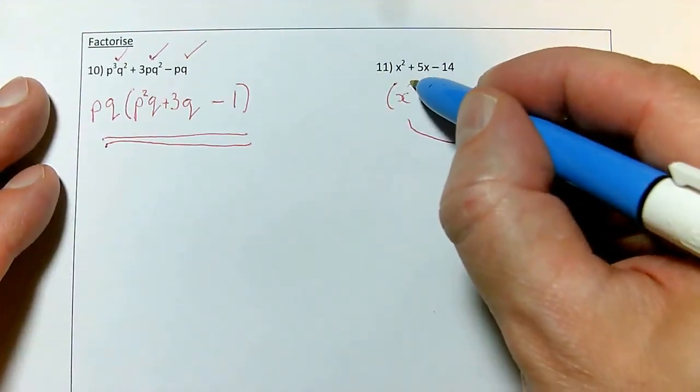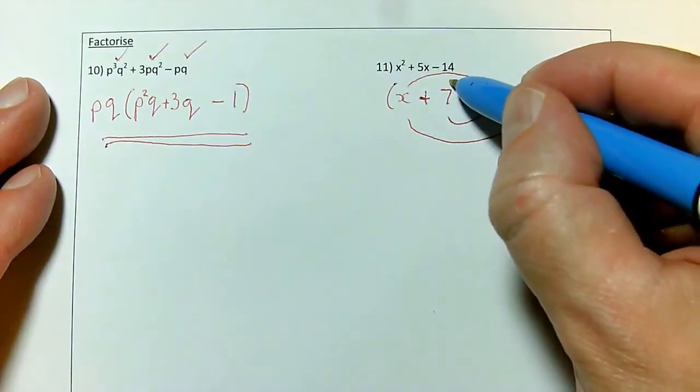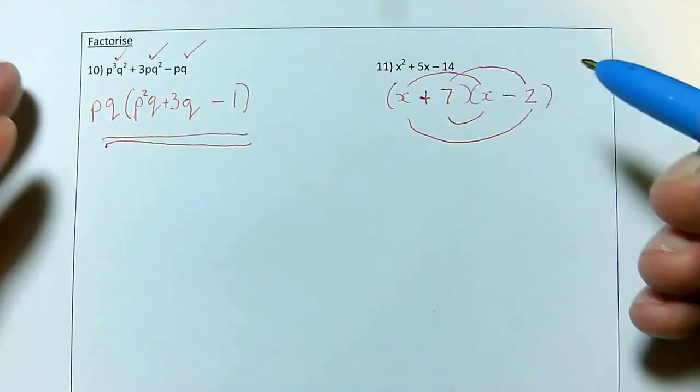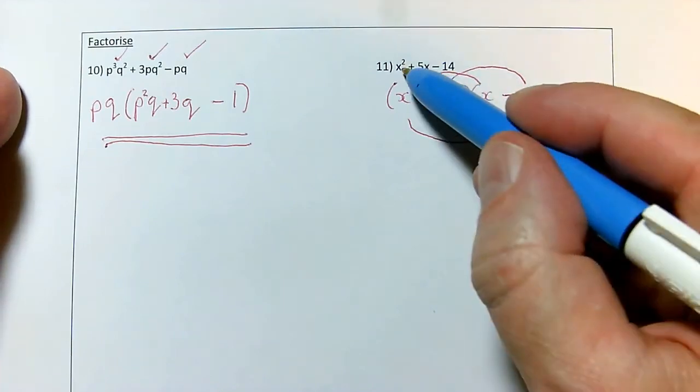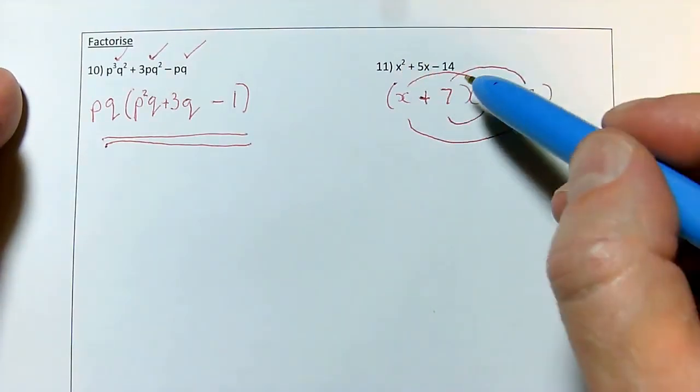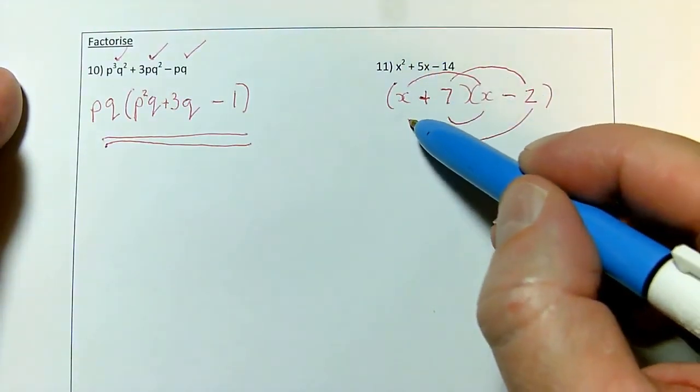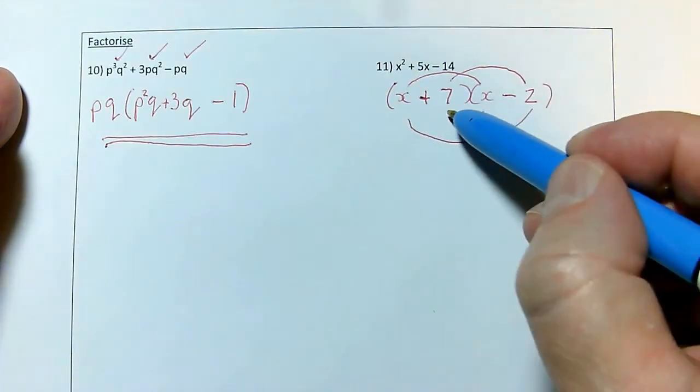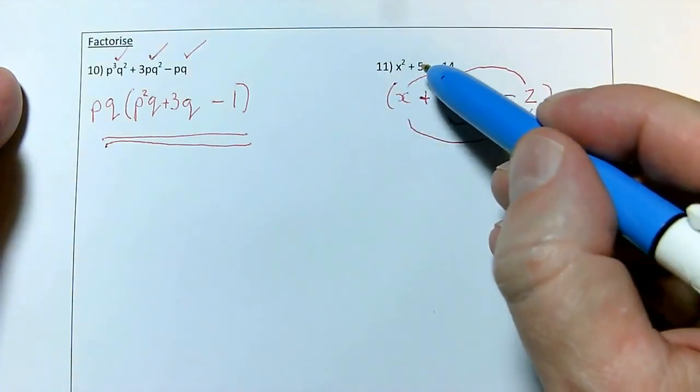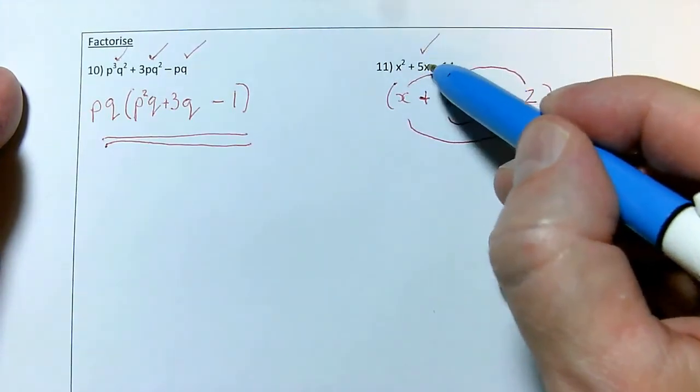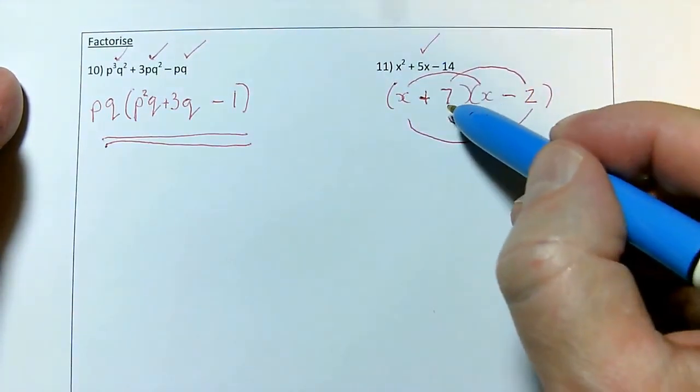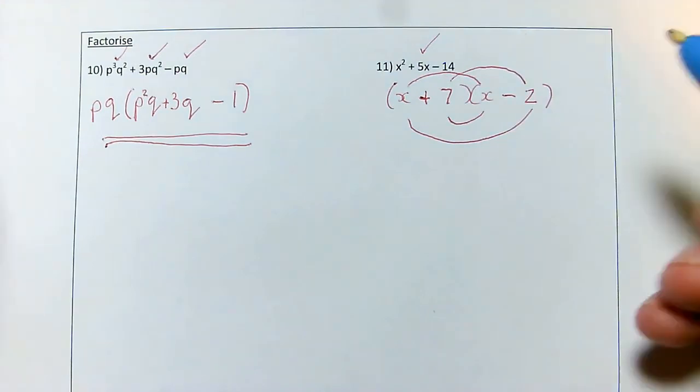But I strongly recommend that you do the whole thing, so you use your smiley face or your foil, or a grid if you like grids, and do x times x, that's x squared, that's good. Outside, x times minus 2 is minus 2x plus 7x does equal 5x. So that term, that's the one to really check. And then 7 times minus 2 does equal minus 14.